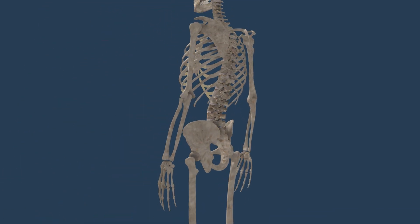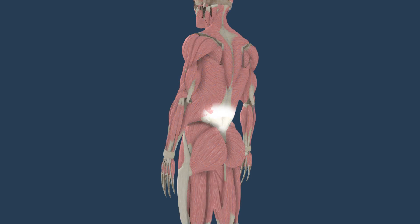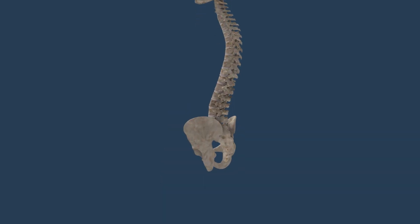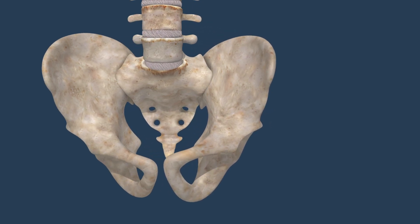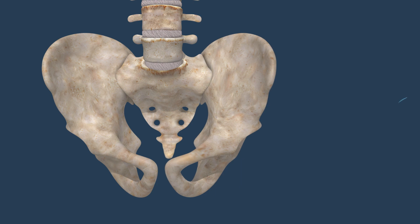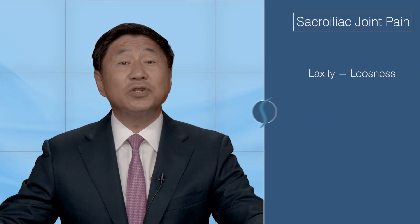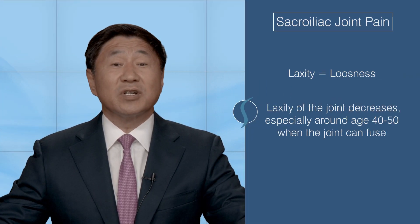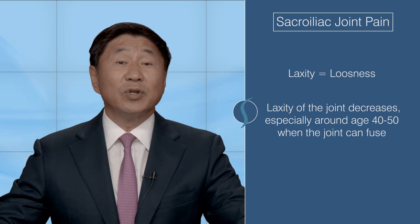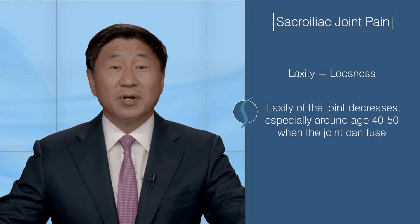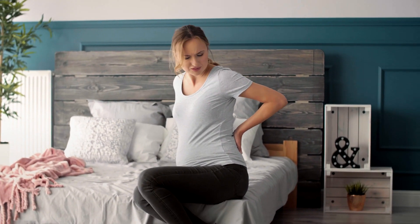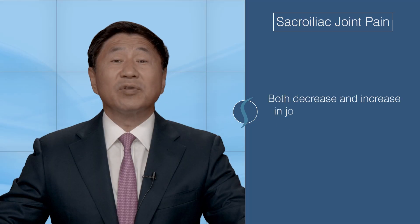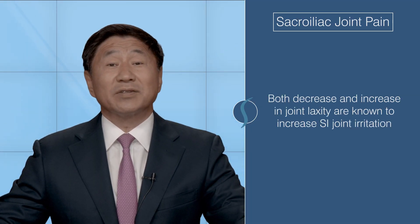An SI joint irritation may cause patients to experience low back or buttock pain. The SI joint is subject to many different types of forces including shearing, rotation, torsion, and tension. The laxity or loosening of the joints decreases especially around age 40 or 50, when the joint can naturally fuse. Pregnant women are most vulnerable to pain as the hormonal changes cause joint laxity. Both this decrease and increase in joint laxity are known to increase SI joint irritation.